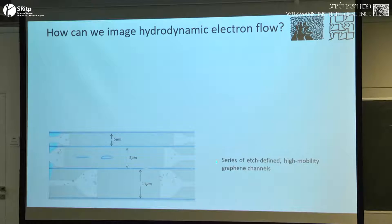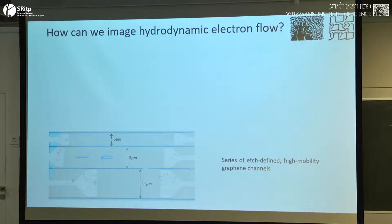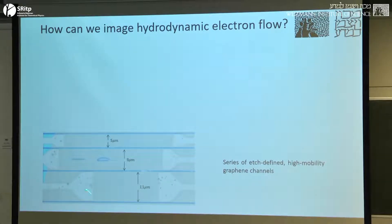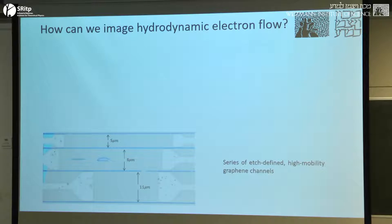These experiments are done in a series of graphene channels. We have source and drain contacts in gold; the graphene is defined by etching blue lines through it. You can also define channels with various geometries, but we're focusing on the middle of a straight channel. We have many different samples and see consistent phenomena across a variety of channels, so the results aren't limited to one channel with some weird artifact.